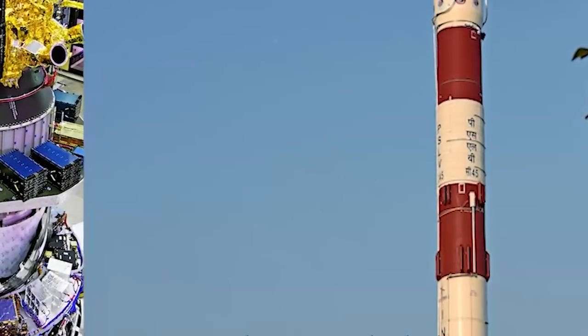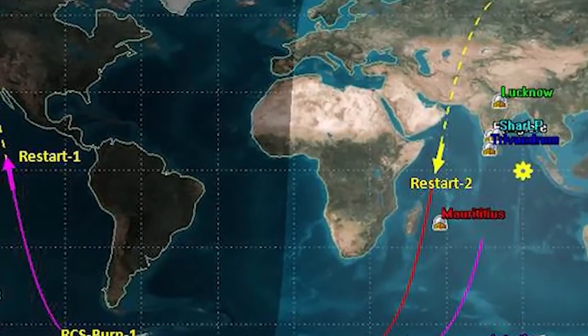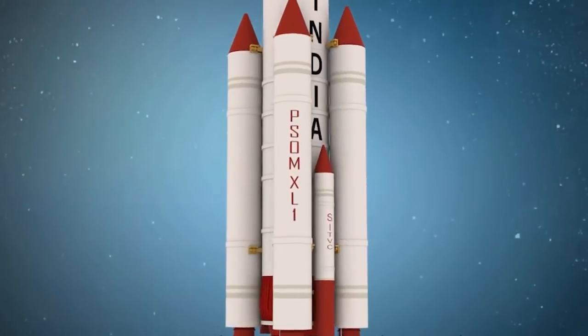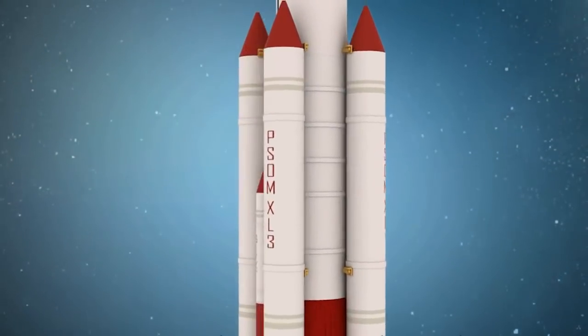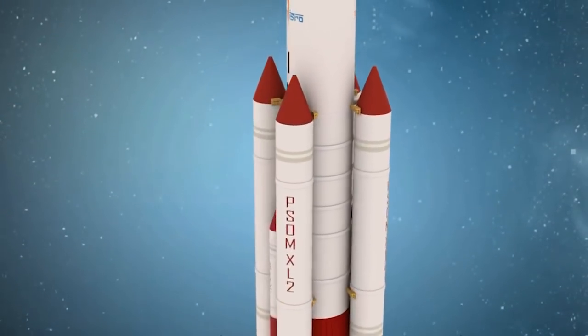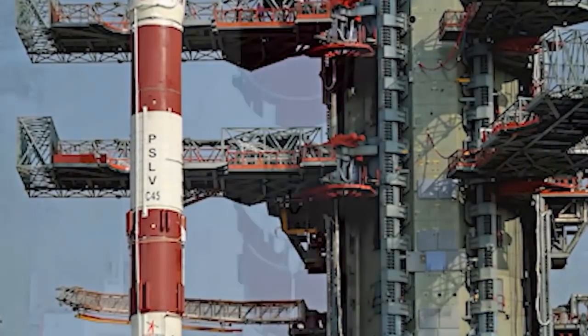ISRO will provide a launcher, S-Band Synthetic Aperture Radar Payload, Spacecraft Bus and Associated Services. Whereas NASA will provide the project's L-Band SAR, a payload data subsystem, a solid-state recorder and a GPS receiver.